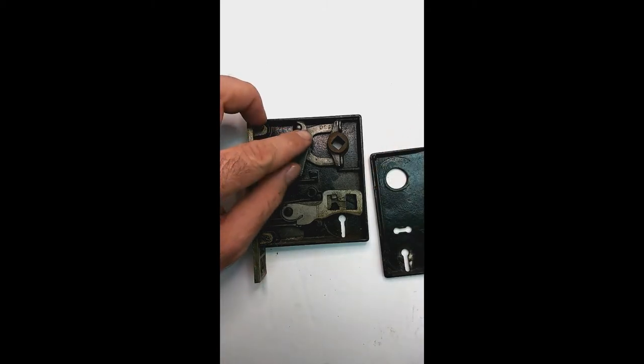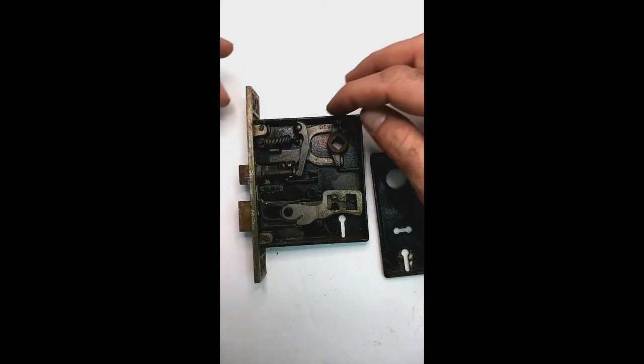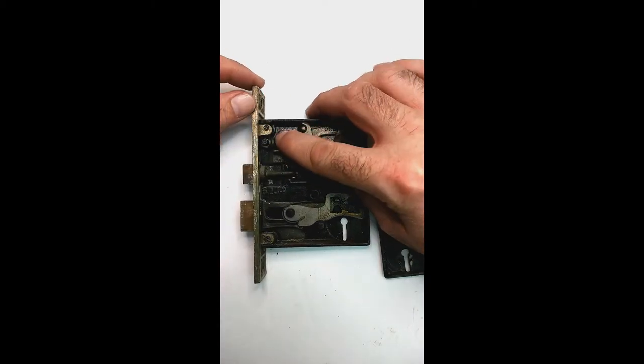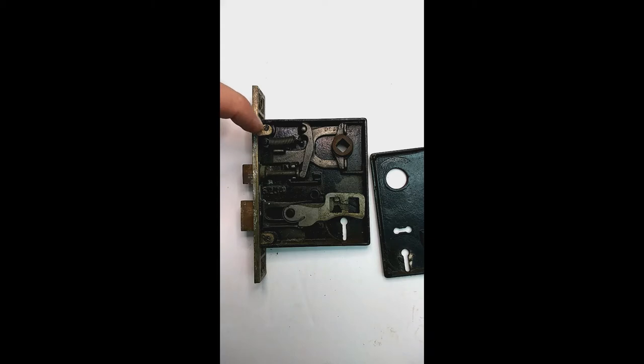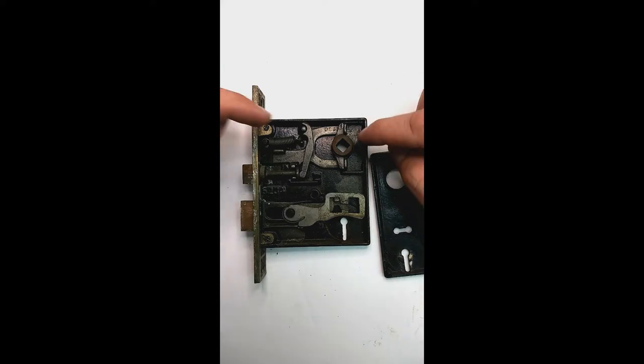But what's cool on the inside, these are all casted pieces, but this spring right here is what makes me think that it's 60s or it's a later model than the lock that I covered the other day because that lock was primarily using spring steel for the latch bolt.